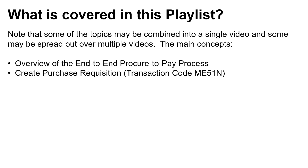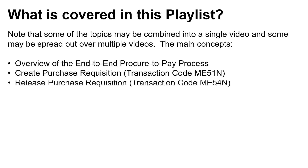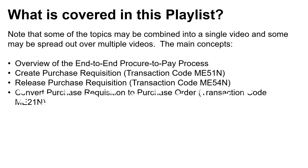Starting with Create Purchase Requisition, Transaction Code ME51N. Then Release Purchase Requisition, Transaction Code ME54N. Then Convert Purchase Requisition to Purchase Order, Transaction Code ME21N. Note there are other more efficient ways to convert purchase requisitions to purchase orders — for example, Transaction Code ME57 and Transaction Code ME59N. Time permitting, we'll attempt to cover these as well.